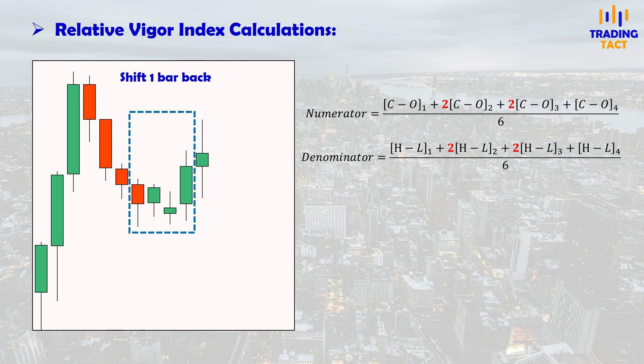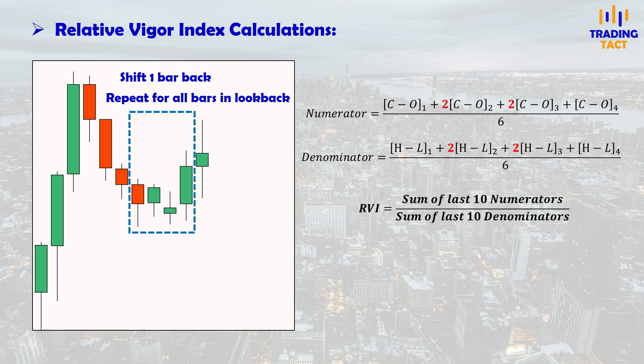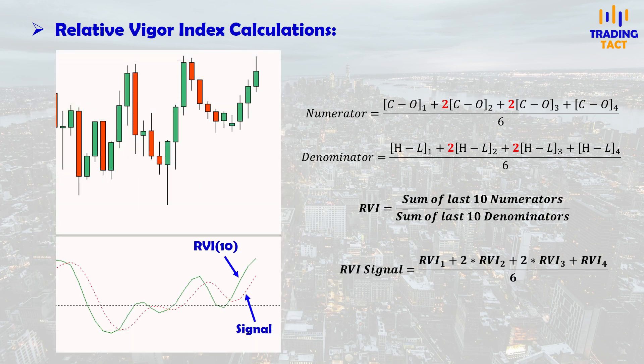Now shift your analysis one bar back and repeat the above analysis to get the numerator and denominator for the previous bar. Keep moving backwards until you cover your entire look-back period, which is set to 10 by default. The RVI is the sum of the numerators divided by the sum of the denominators, each summed over the last 10 periods. Sometimes an additional signal line is used, which is the symmetrical moving average of the last four RVI values.